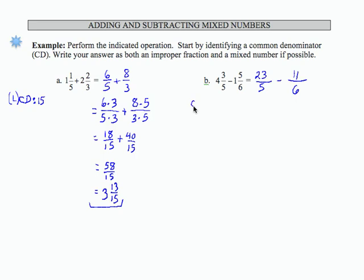The common denominator in this case is 5 times 6, which is 30. That is also the lowest common denominator. There is no other number, less than 30, that both 5 and 6 will divide into evenly.